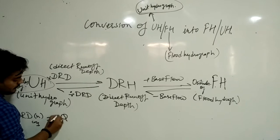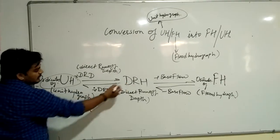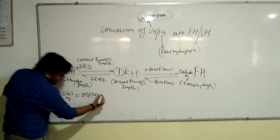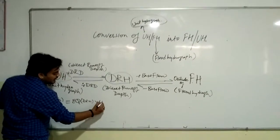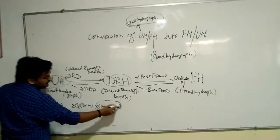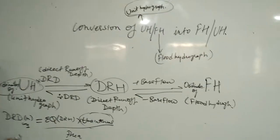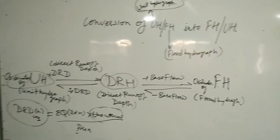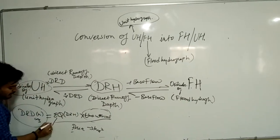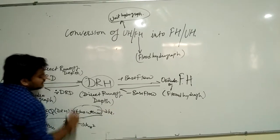Suppose Q is the summation — the sum of the ordinates of the given DRH. These ordinates of the given DRH are multiplied by the time interval or time duration for the given duration, divided by the area, to give the direct runoff depth. Suppose the area is in square kilometers, delta Q is given in cubic meters per second, and the time interval is given in hours.